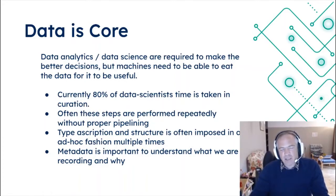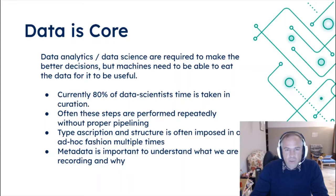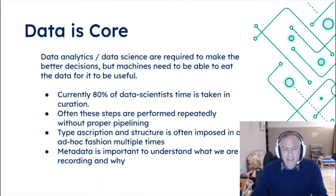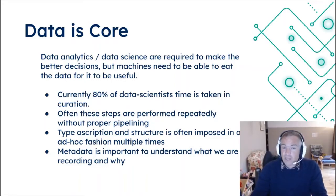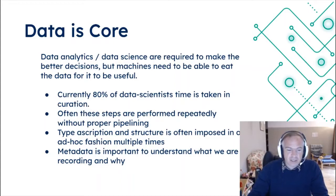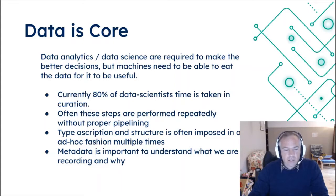This creates a lot of possibility for error. A lot of times you can end up with different interpretations of the data that are frankly wrong. So it's important to have metadata to understand what we are recording, why, what type it is — but more information than just the type. At least the type, but more information is better. And less time is spent on this metadata than really makes sense.